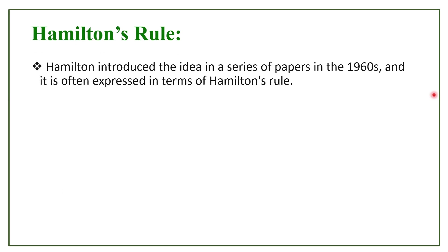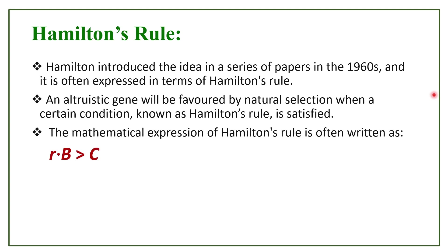The next point is Hamilton's rule. W.D. Hamilton introduced this idea in a series of papers in the 1960s. It has a mathematical expression: RB greater than C. By this, he explains that an altruistic gene will be favored by natural selection when certain conditions are met, expressed by this mathematical expression: RB greater than C.